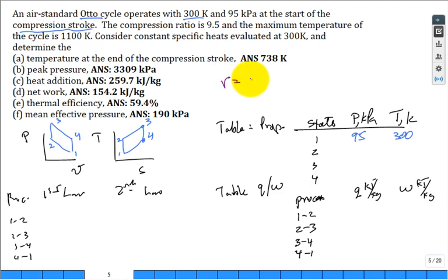r is equal to 9.5, defined as v1 divided by v2, which is the same as v4 divided by v3. Because v1 and v4 are the same and v2 and v3 are the same, that's the compression ratio.